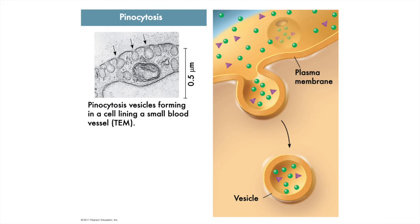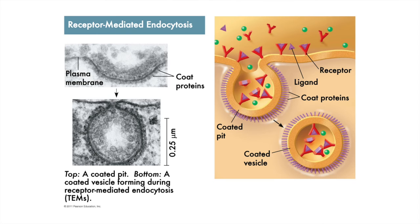Pinocytosis means cell drinking. In pinocytosis, vesicles are formed not around particles but rather molecules are taken up when extracellular fluid is gulped, as you can see in the picture. Receptor-mediated endocytosis is the most complex in appearance. In this process the surface of the cell has receptor proteins, like signal transduction molecules we saw earlier in this chapter.